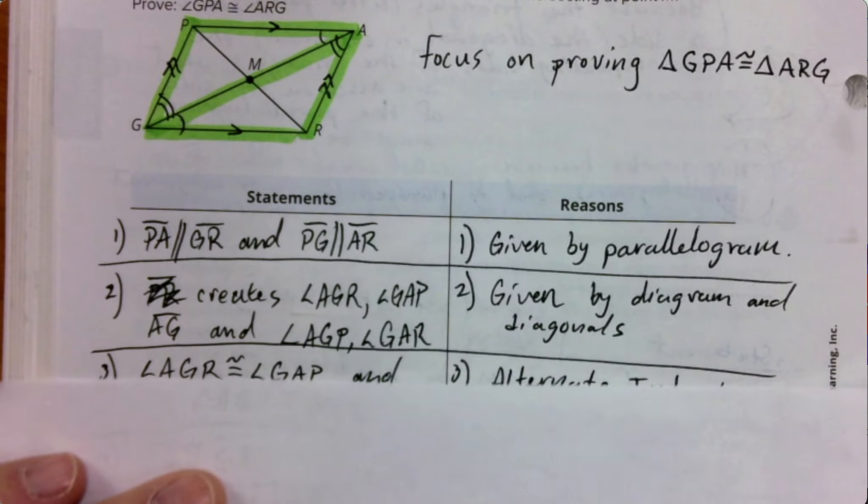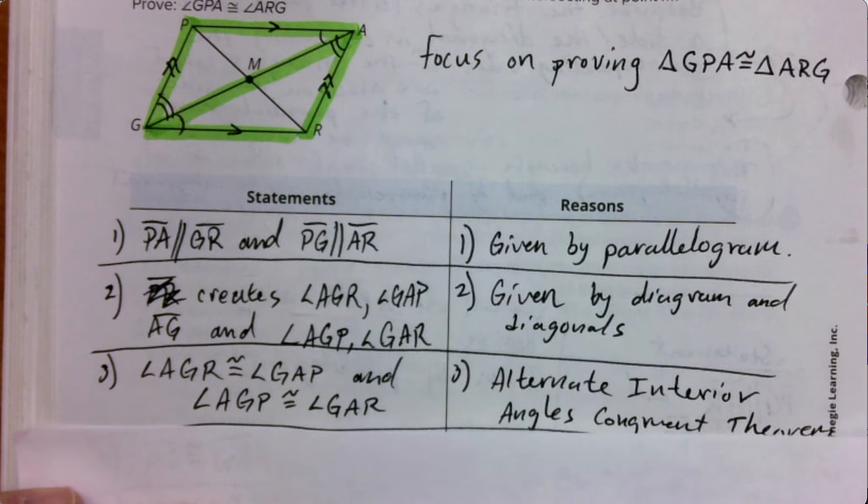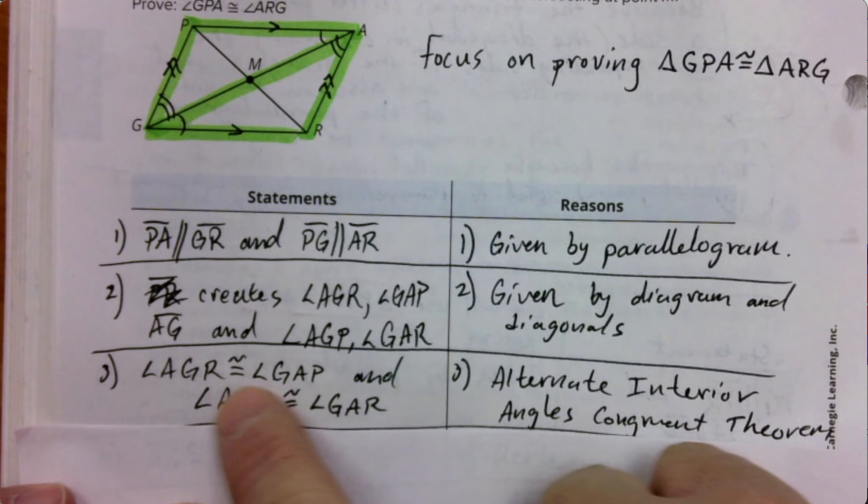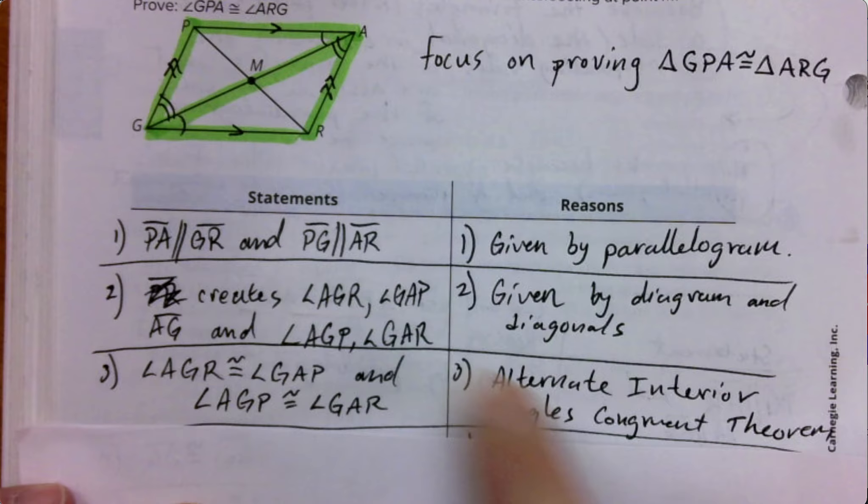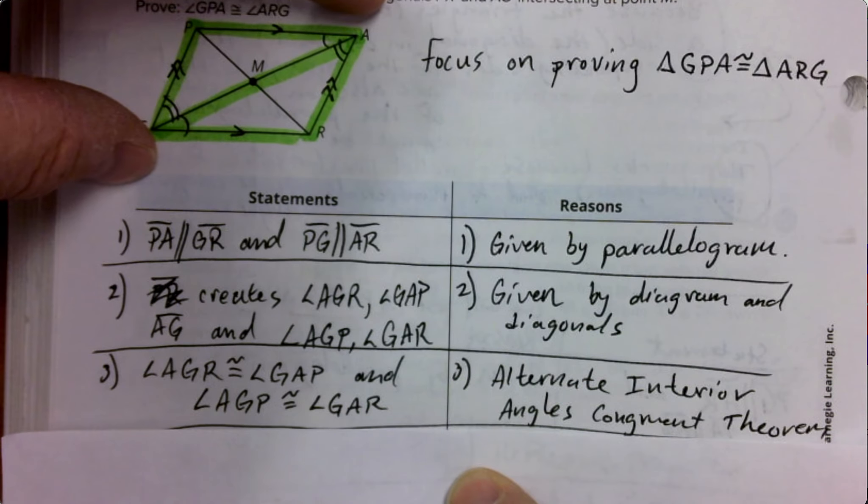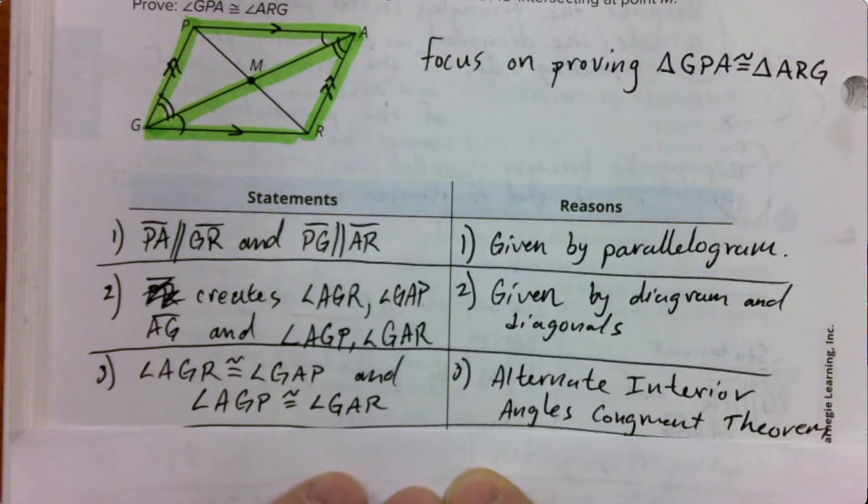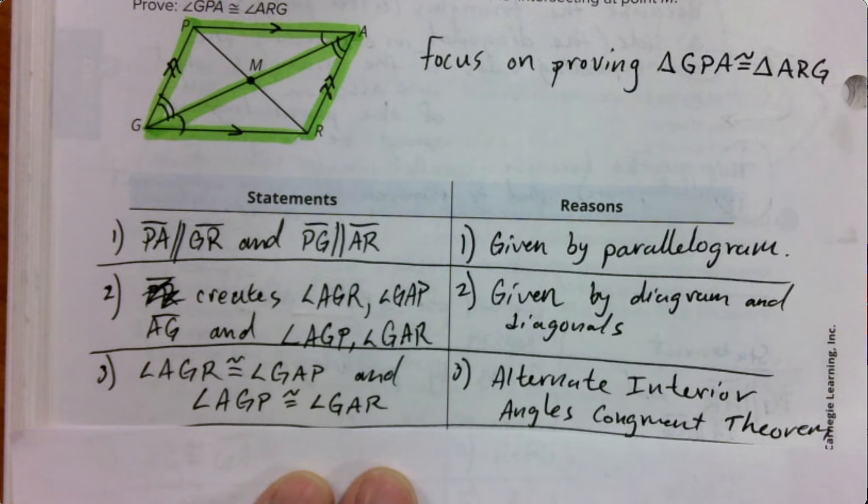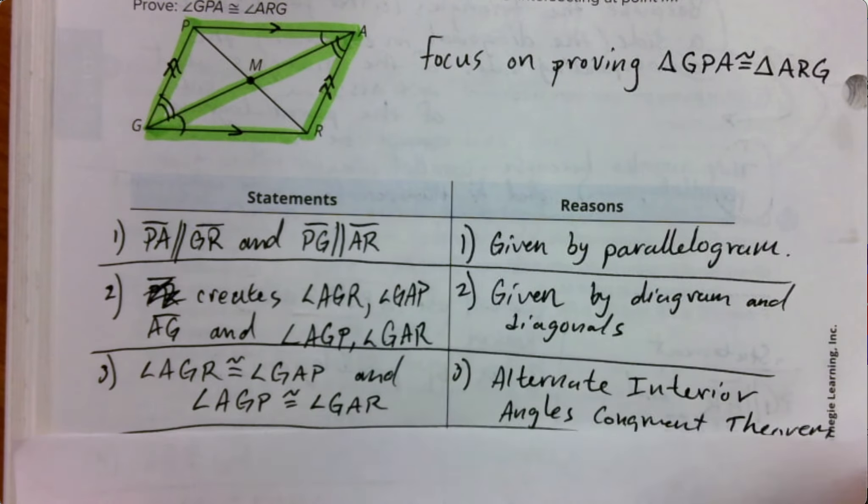But because that happened, we get to say that they're actually making equalities or congruences. Alternate interior angles are congruent. These are the pair of angles that are congruent. Because they're alternate interior angles, when two parallel lines are crossed by a transversal, they create alternate interior angles that are congruent. Same thing, AGP and GAR are congruent.